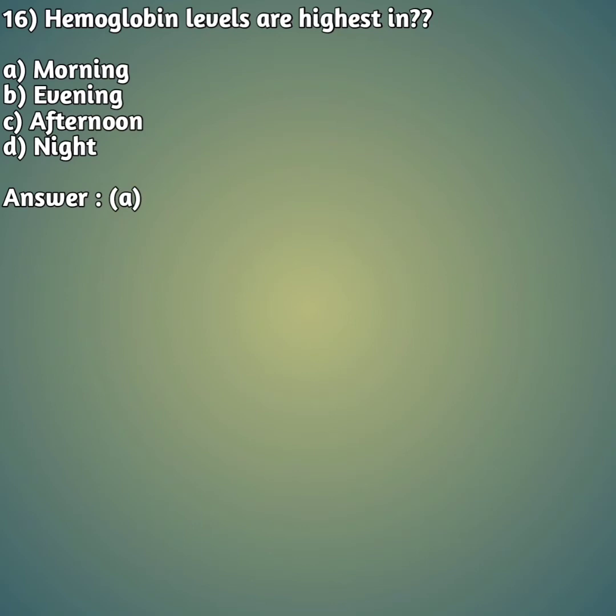Question 16: Hemoglobin levels are highest in — option A: morning, option B: evening, option C: afternoon, option D: night. The right answer is option A, that is morning. Hemoglobin levels are highest in the morning.